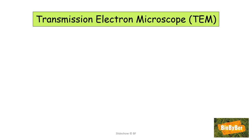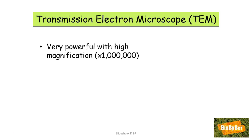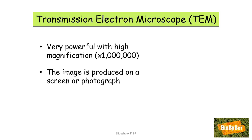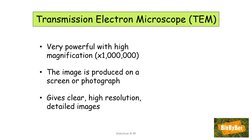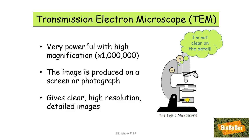The transmission electron microscope is very powerful, with much higher magnifications than the light microscope — it has the capacity to magnify a specimen a million times. The image is produced on a computer screen or in a photograph. The TEM gives very clear, high-resolution images, allowing you to distinguish structures such as the cell membrane from the cell wall, and it also produces very detailed images.